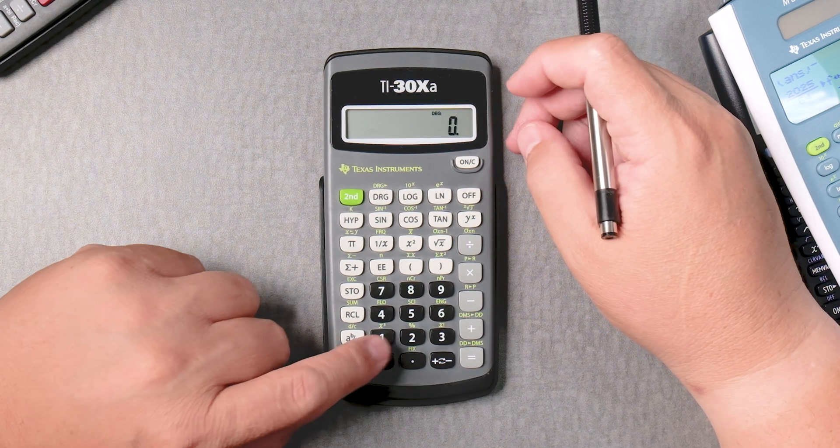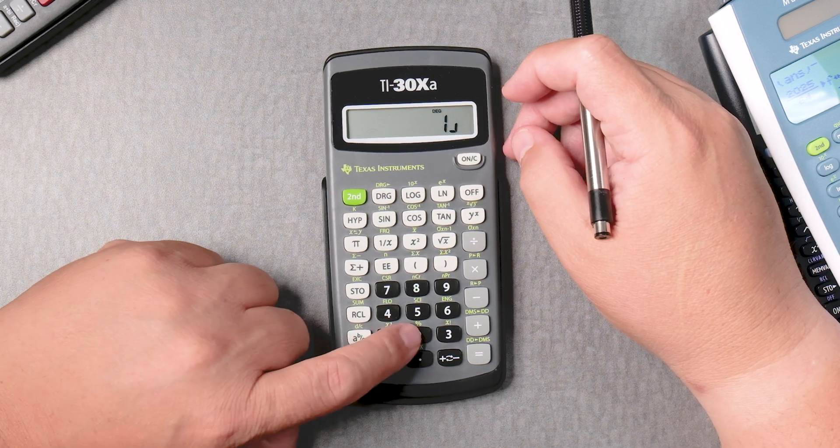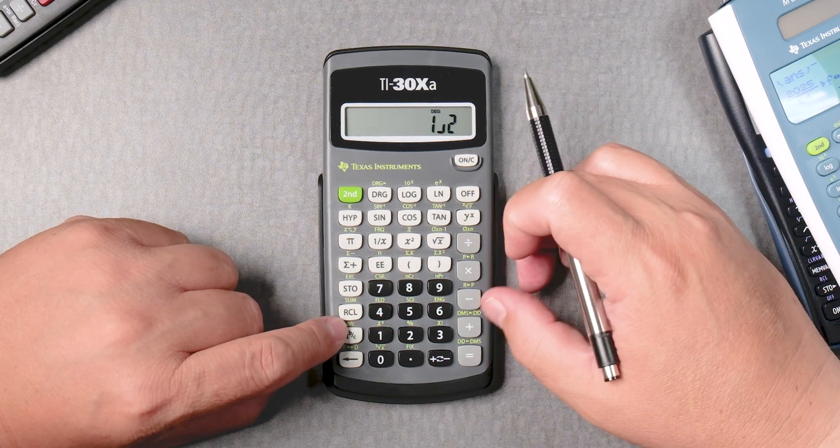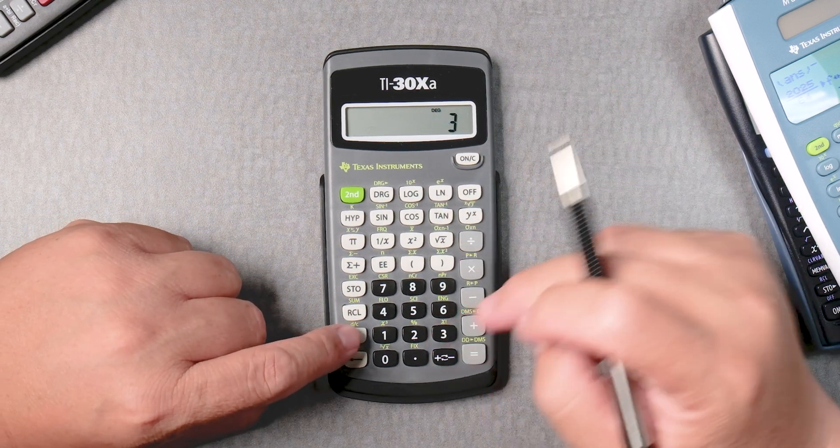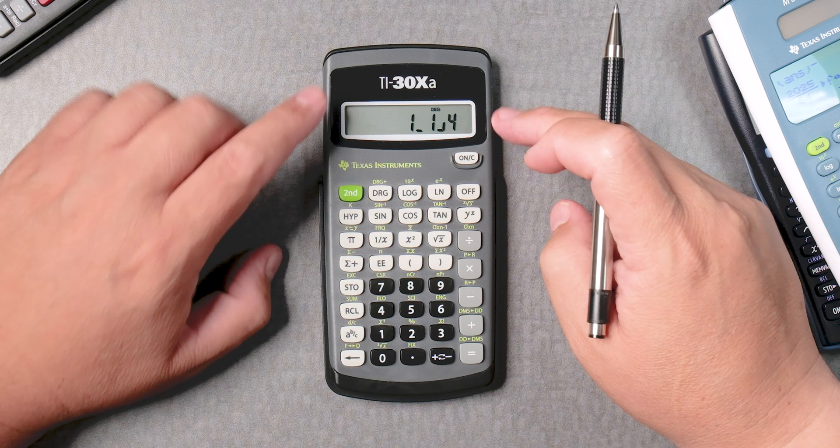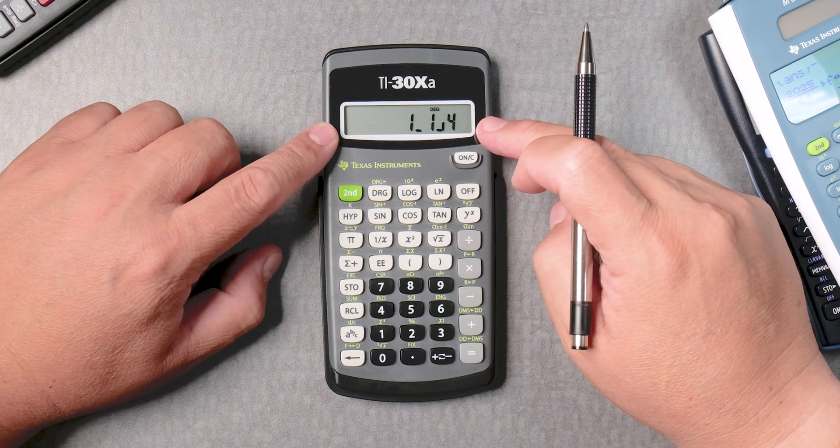So let's say I want 1 half, 1 ABC 2 plus 3 fourths, 3 ABC 4 equals, very straightforward, 1 and 1 fourth.